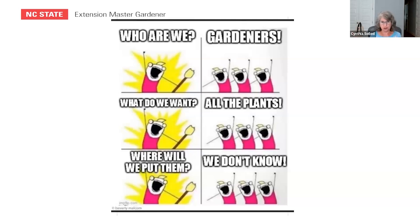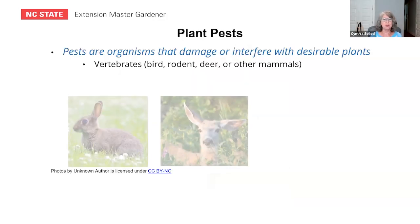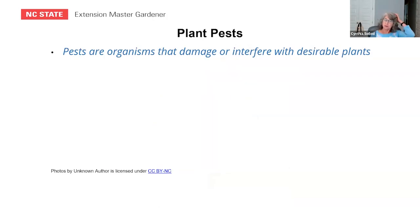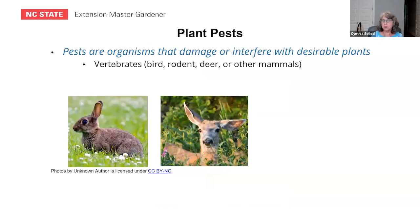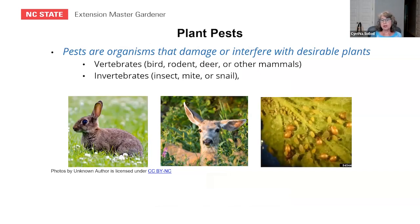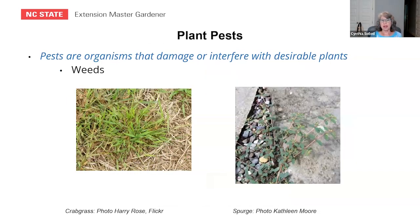So who are we? We are gardeners. And what do we want? We all want all the plants. And wherever it is that we put them, we do want them to be healthy. The definition of pests are organisms that damage or interfere with desirable plants. There can be vertebrates, including birds, rodents, deer, and other mammals. They can be invertebrates, which include insects, mites, snails. Weeds are also pests — they can steal nutrients and water from desirable crops and outshade them.